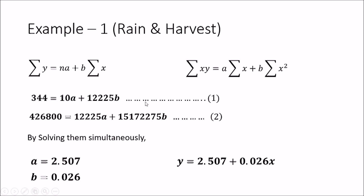We then solve those two simultaneous equations. Once we do that, we get the A value to be 2.507 and the B value to be 0.026. Now we have the linear regression equation: Y equals 2.507 plus 0.026X. Using this equation we can predict a value if we know the value of X.